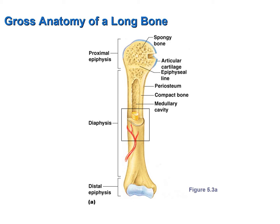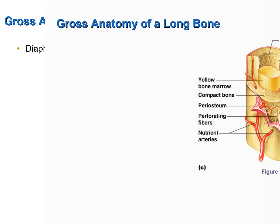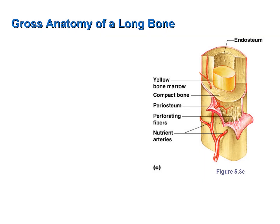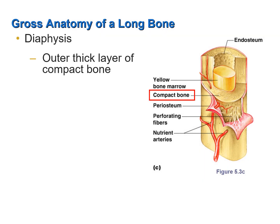The shaft or middle portion of the long bone is referred to as the diaphysis. The diaphysis consists mainly of compact bone — there's an outer thick layer of compact bone and a very thin inner layer of spongy bone, although you can't really see it in this figure.